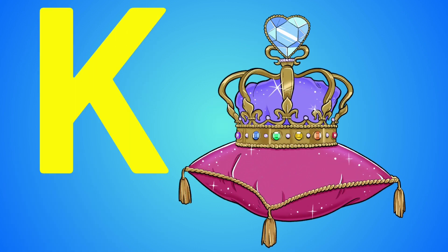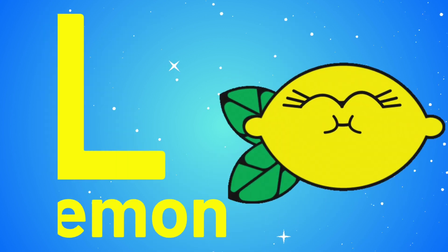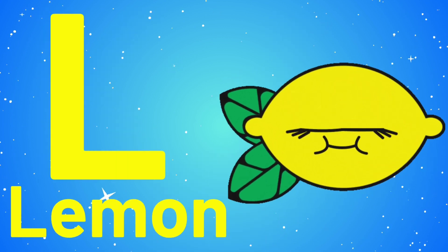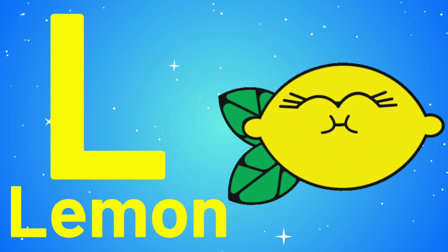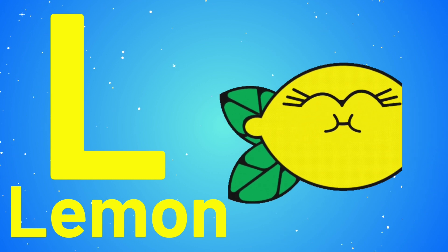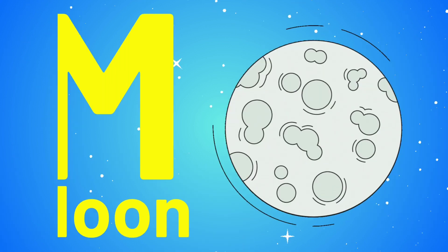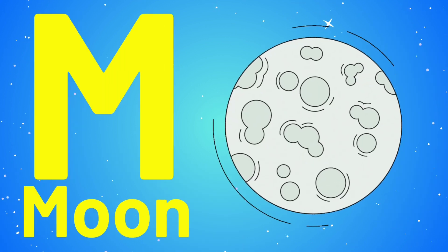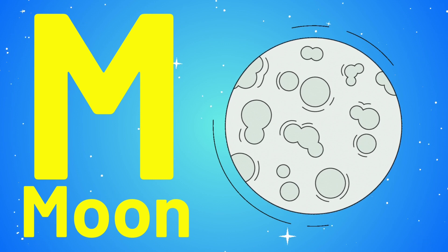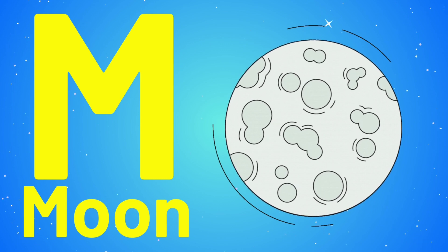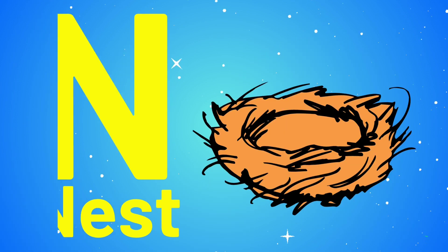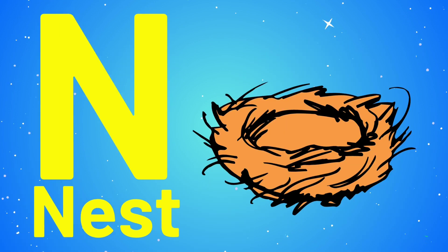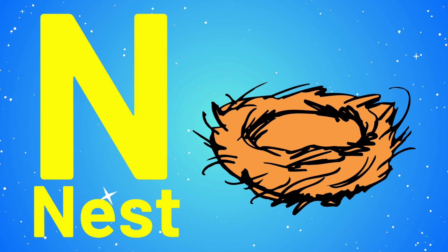K is for King Crown. L is for Lemon. M is for Moon. N is for Nest.